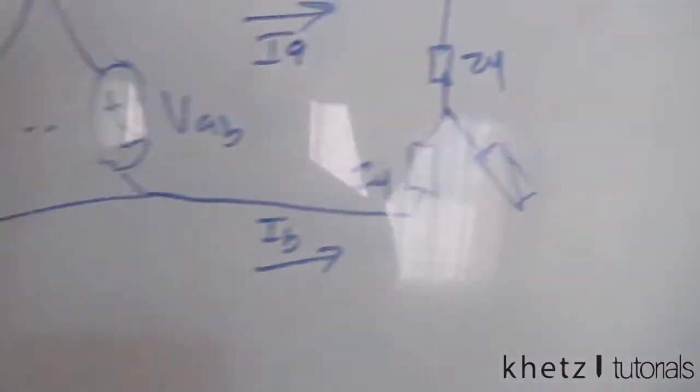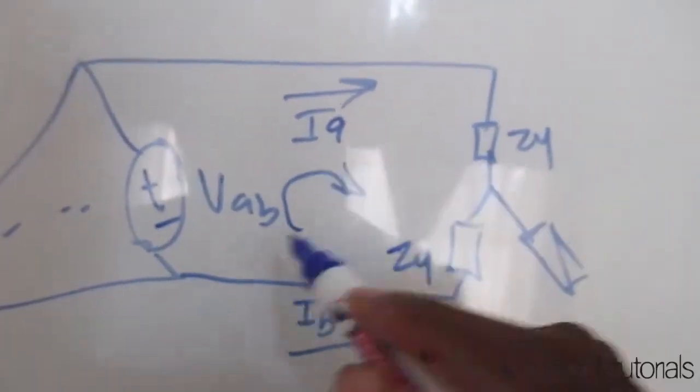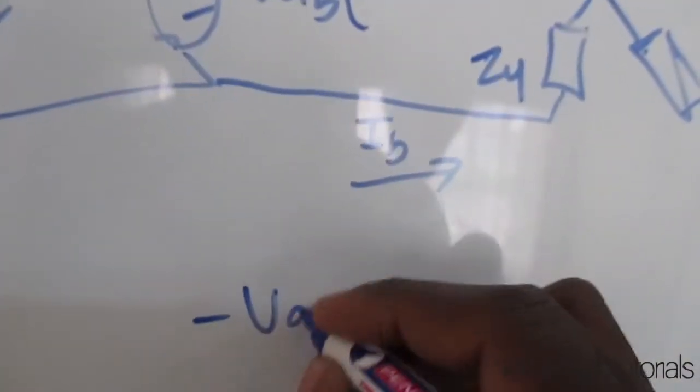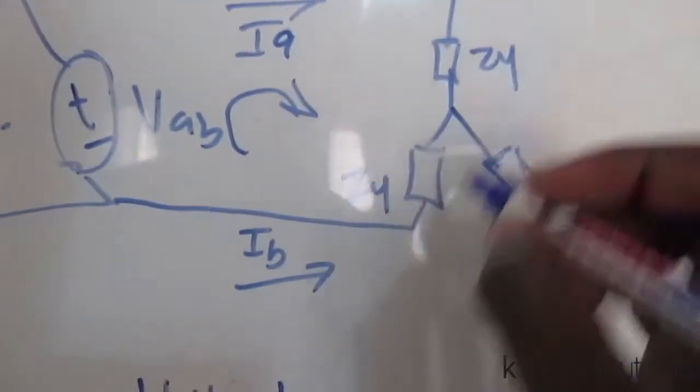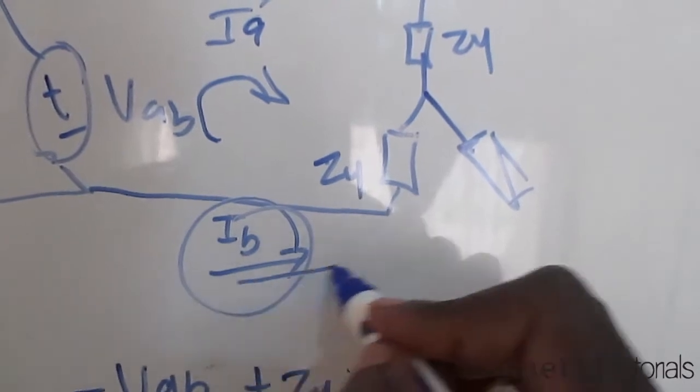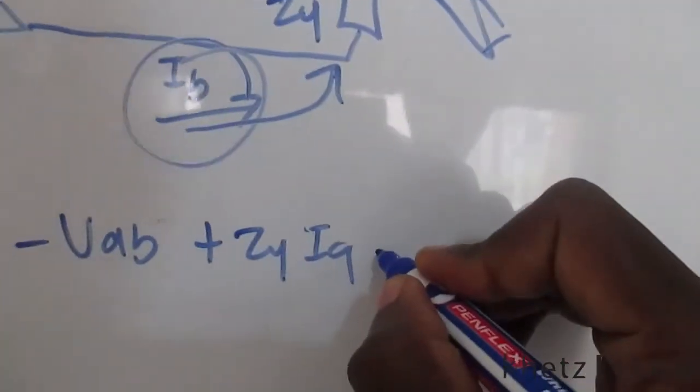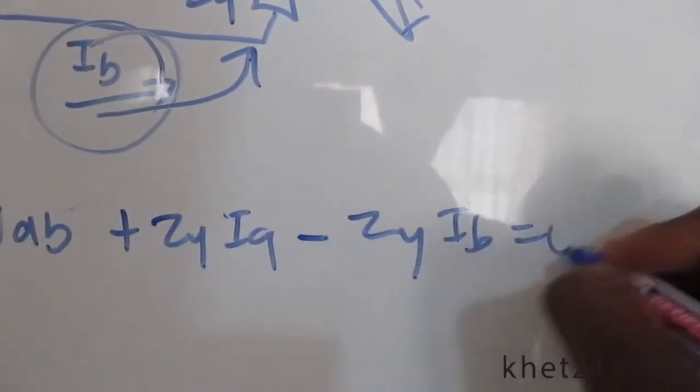Now we're about to find the formula which is going to help us find our IA. Going around the loop in this direction, we're going to have negative VAB plus Zy·IA. If you look at IB, it's going that direction, which means when we come to it at that point it's going to be negative. So we're going to have negative Zy·IB equals zero.